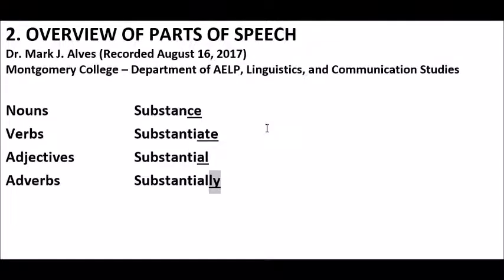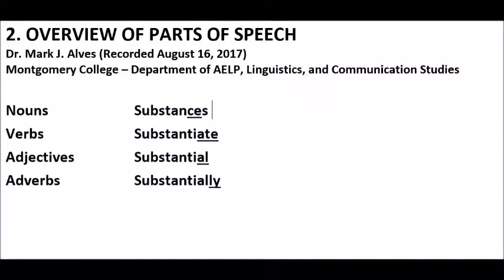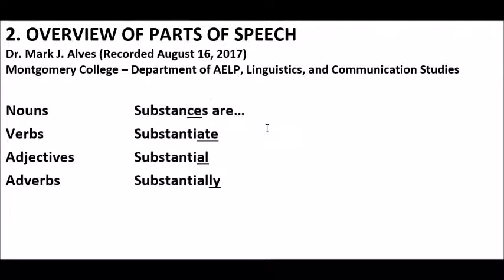In addition to suffixes, we can talk about grammatical features. For nouns, I can add an 's' to make it plural. Once it is a noun, we can add a verb after it to make a complete sentence — 'Substances are something.' This noun is now a subject before the verb 'are.' We know it's plural because we use 'are,' not 'is,' which is for singular nouns — it must be 'substances are,' not 'substances is.'